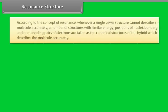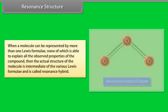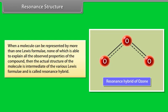Resonance structure: Whenever a single Lewis structure cannot accurately describe a molecule, a number of structures with similar energy, positions of nuclei, and bonding and non-bonding electron pairs are taken as canonical structures of the hybrid. When a molecule can be represented by more than one Lewis formula, none of which explains all observed properties, the actual structure is intermediate among the various Lewis formulae and is called the resonance hybrid.